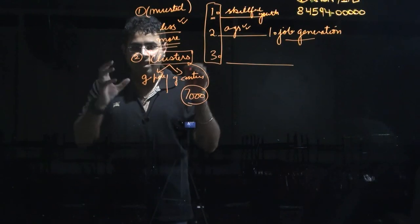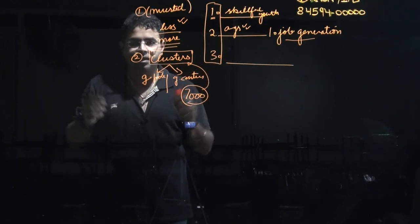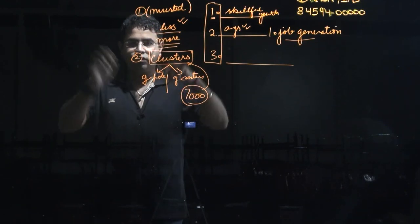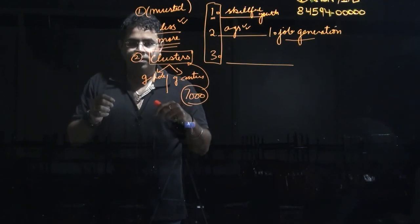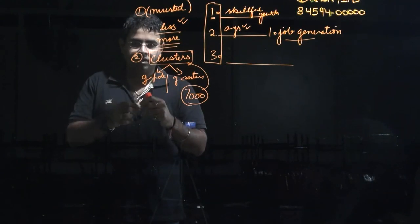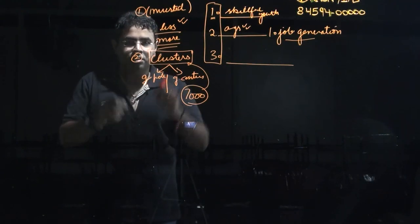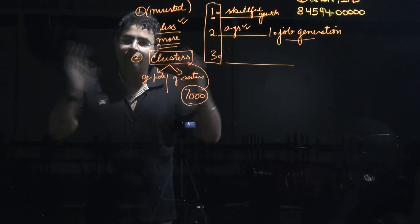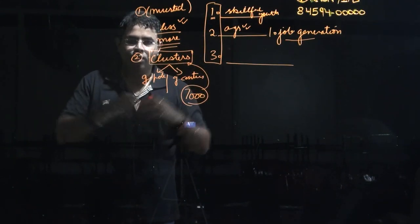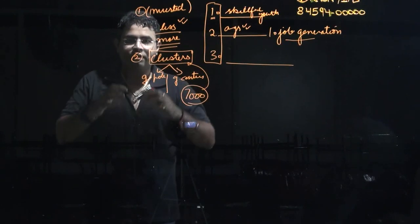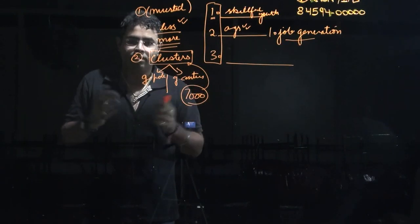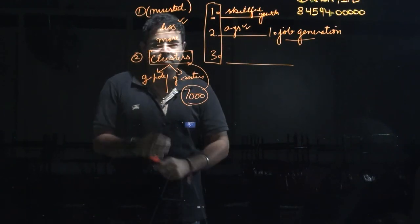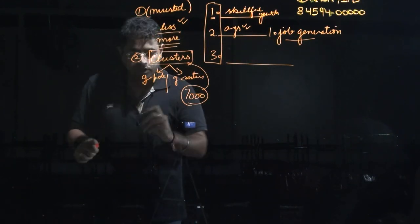Strengthening clusters will invite a lot of investment and make it easier for manufacturers to set up plants, because the cost of setting up declines. You have the availability of raw material, labor, and skillful people all in one place. This is the second key thing that can be done to address job generation.